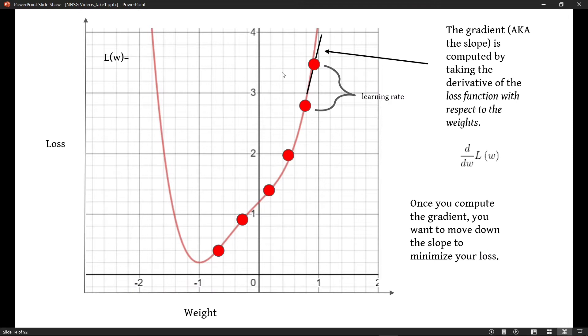This is sort of a higher level overview of what gradient descent is. If you remember in the previous video, I talked about how the weights are randomly initialized. So if you look on this graph, which has all the possible weights on the x-axis and the loss that you get using that weight on the y-axis, since the weight is randomly initialized, you don't really know where you're going to start off on this graph.